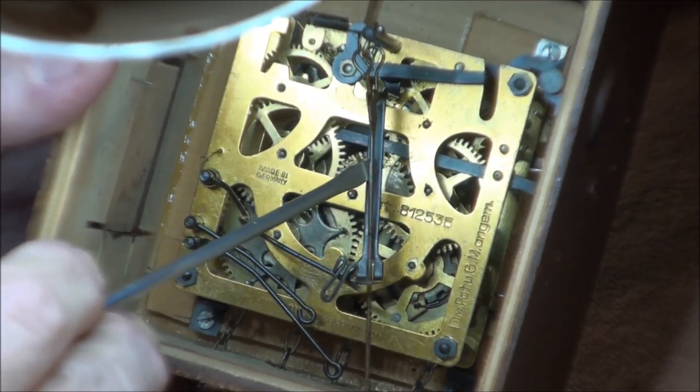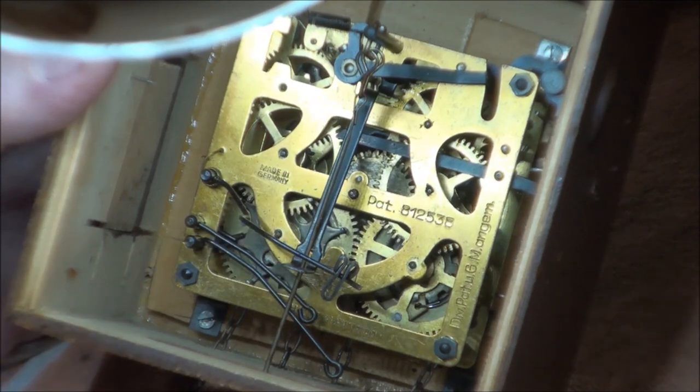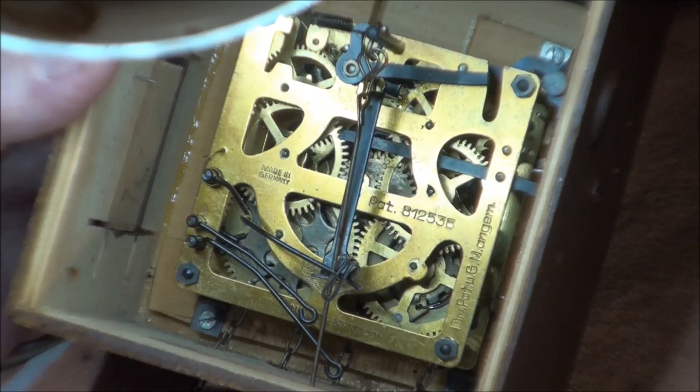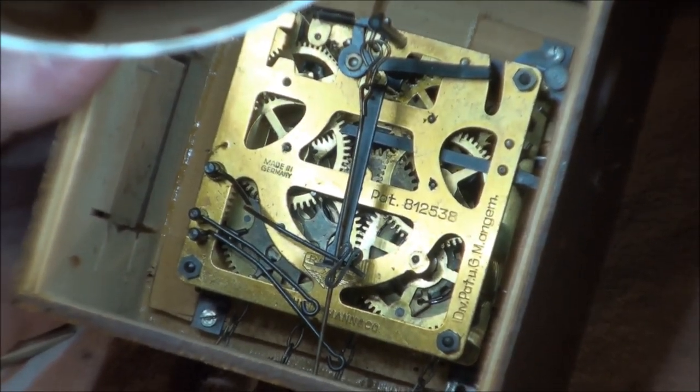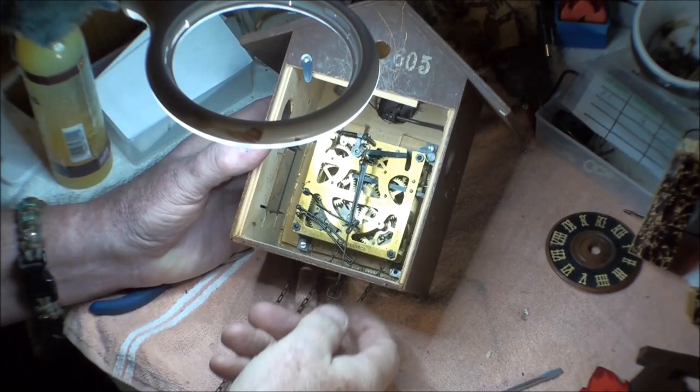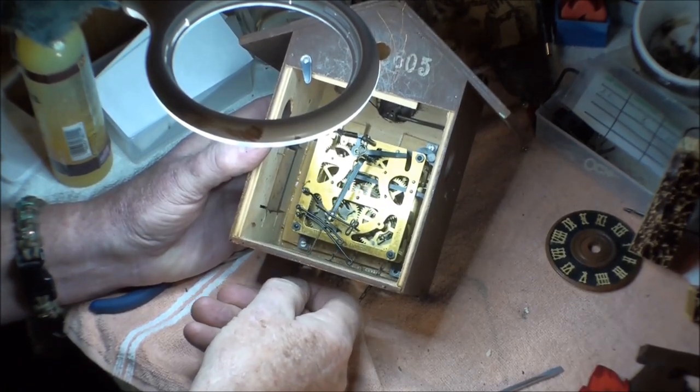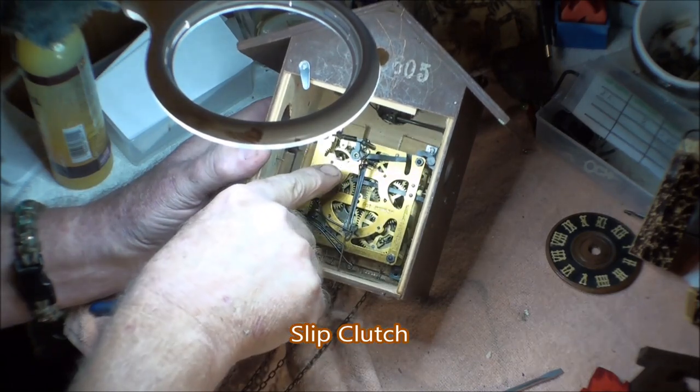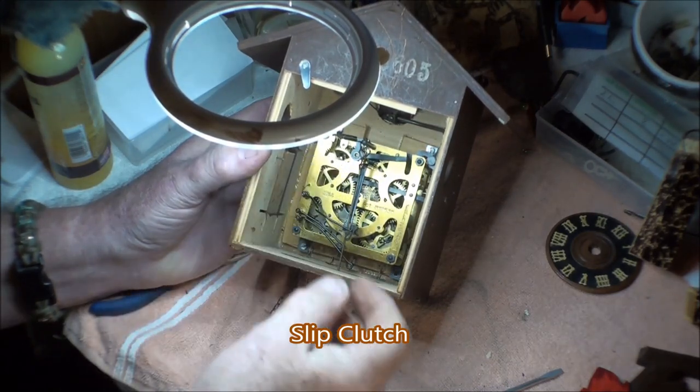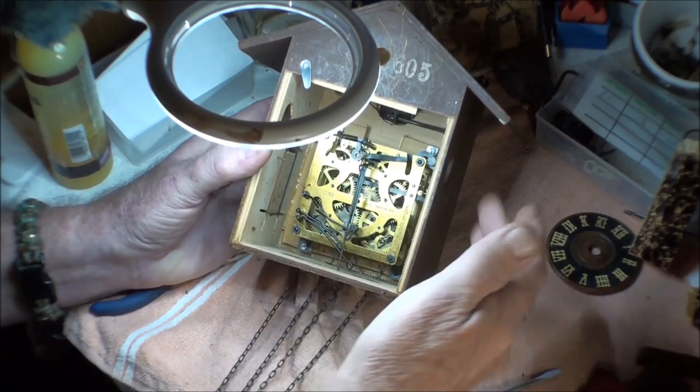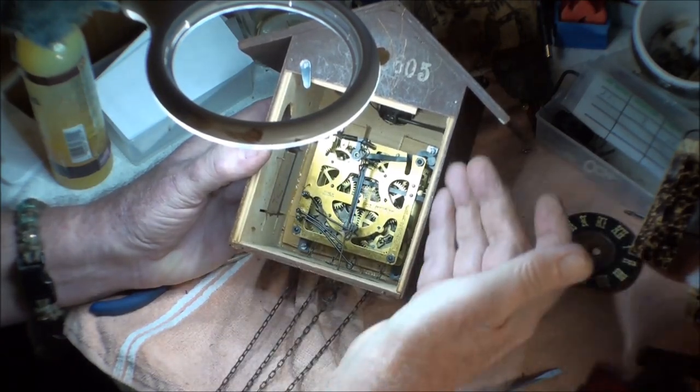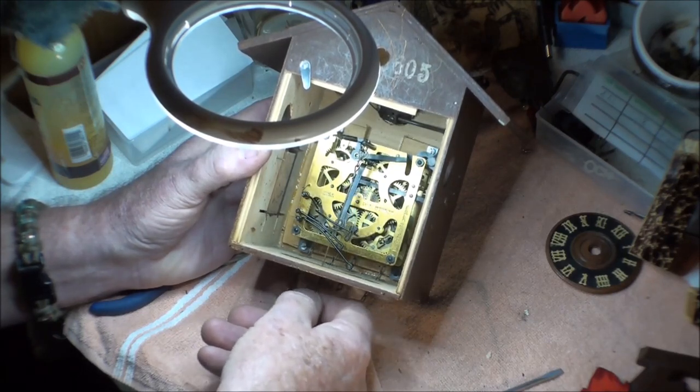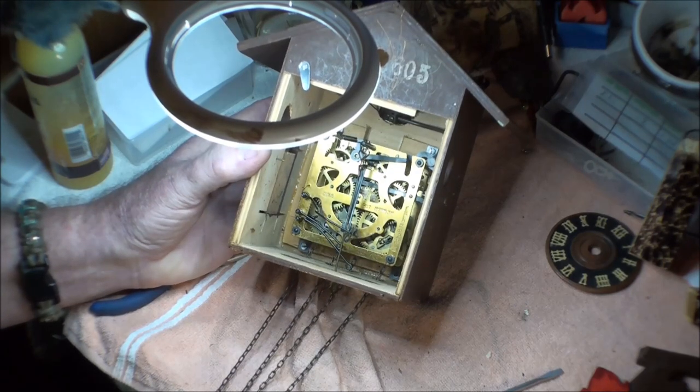There's a patent number 812538. I went ahead and popped the bellows out just so I can show you. See this fatter bar here that the pendulum wire goes through? If you have a fatter bar like this, then that normally means that if your clock is crooked, you can hold on to the pendulum wire and pull it just a little bit one way.